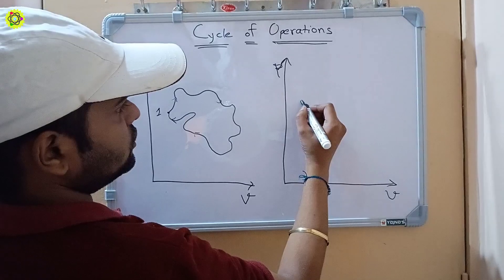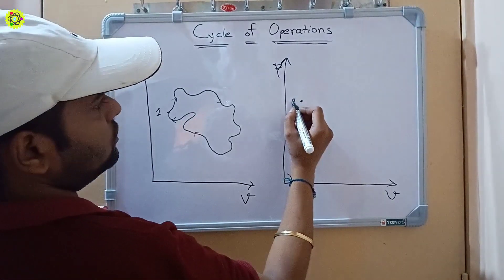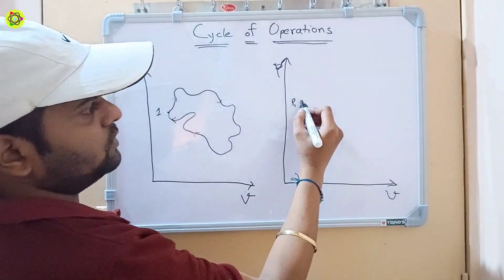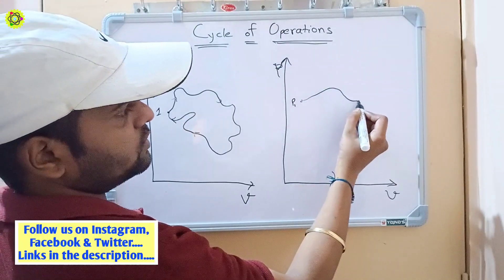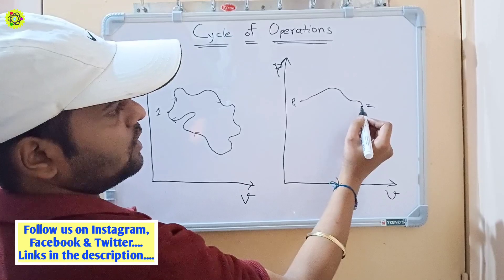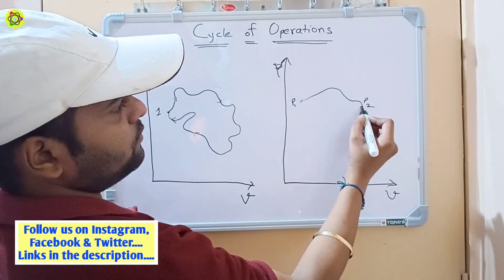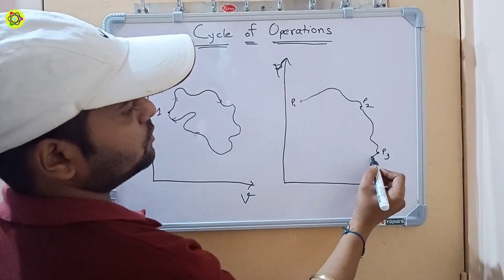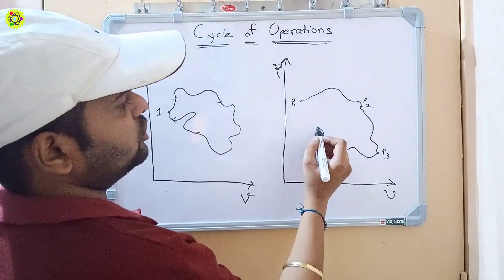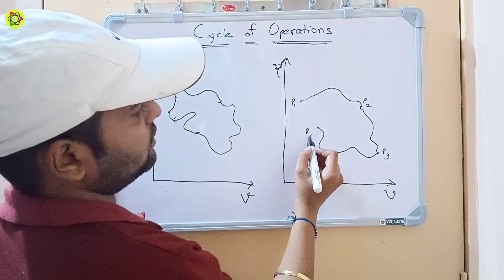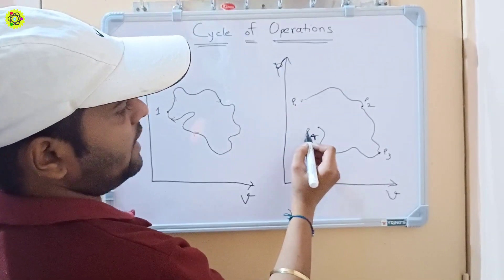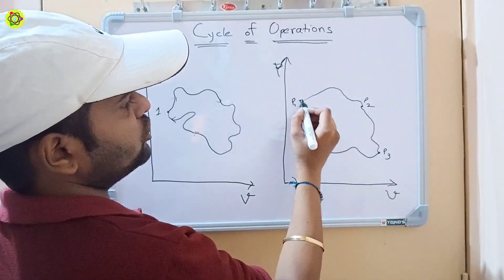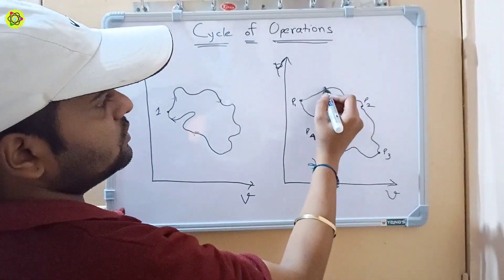Now for another example: this is point one, and one process starts from this point. It goes to point two, then continues to point three, then continues to point four. After that, the process continues and reaches back to the same initial point, that is P1.